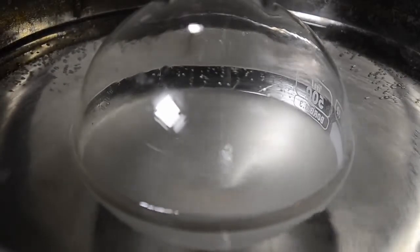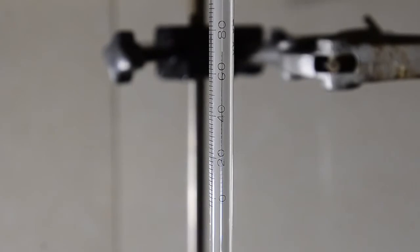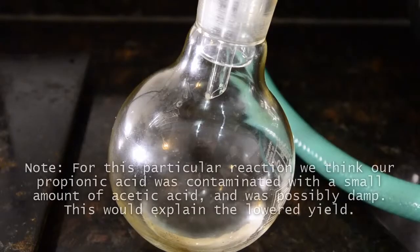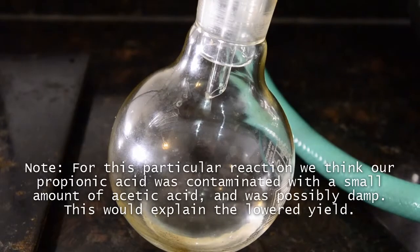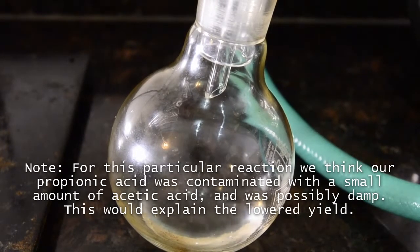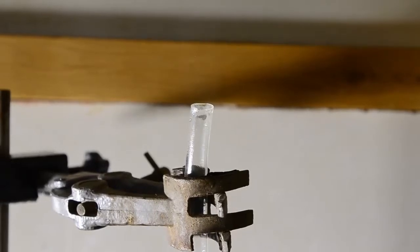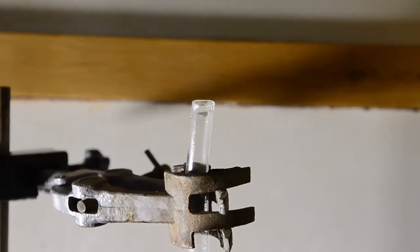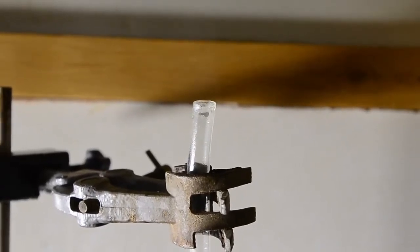Keep heating and the bulk of the distillate should come over above 70 degrees. Keep going until nothing more comes over. This took about an hour and a half in this particular case. HCl fumes continue to be produced to a lesser extent throughout the distillation.